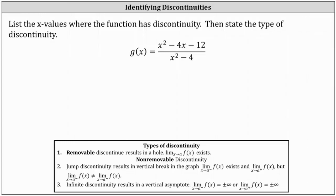We're asked to list the x-values where the function has discontinuity and then state the type of discontinuity. When determining the discontinuity of a rational function, the first step is to factor the numerator and denominator.